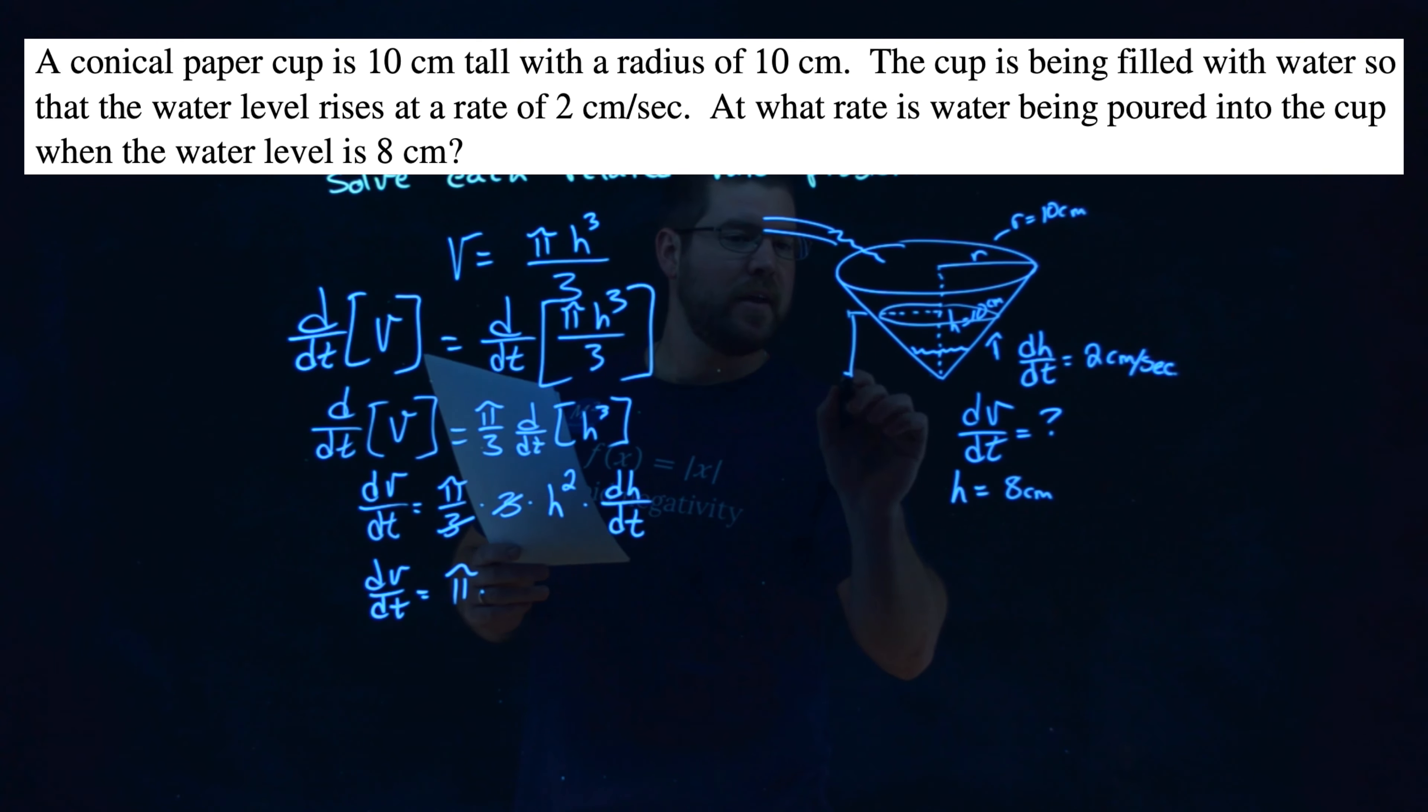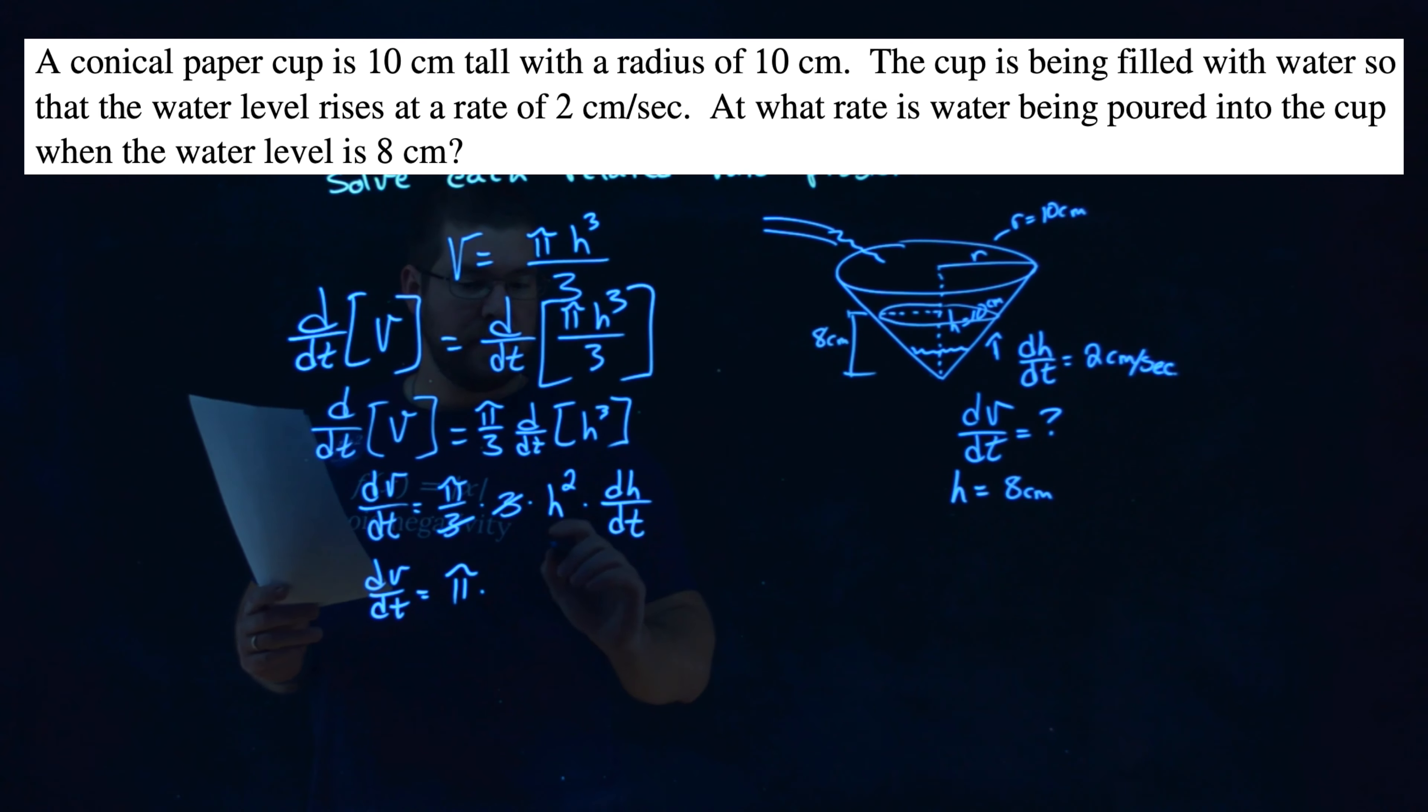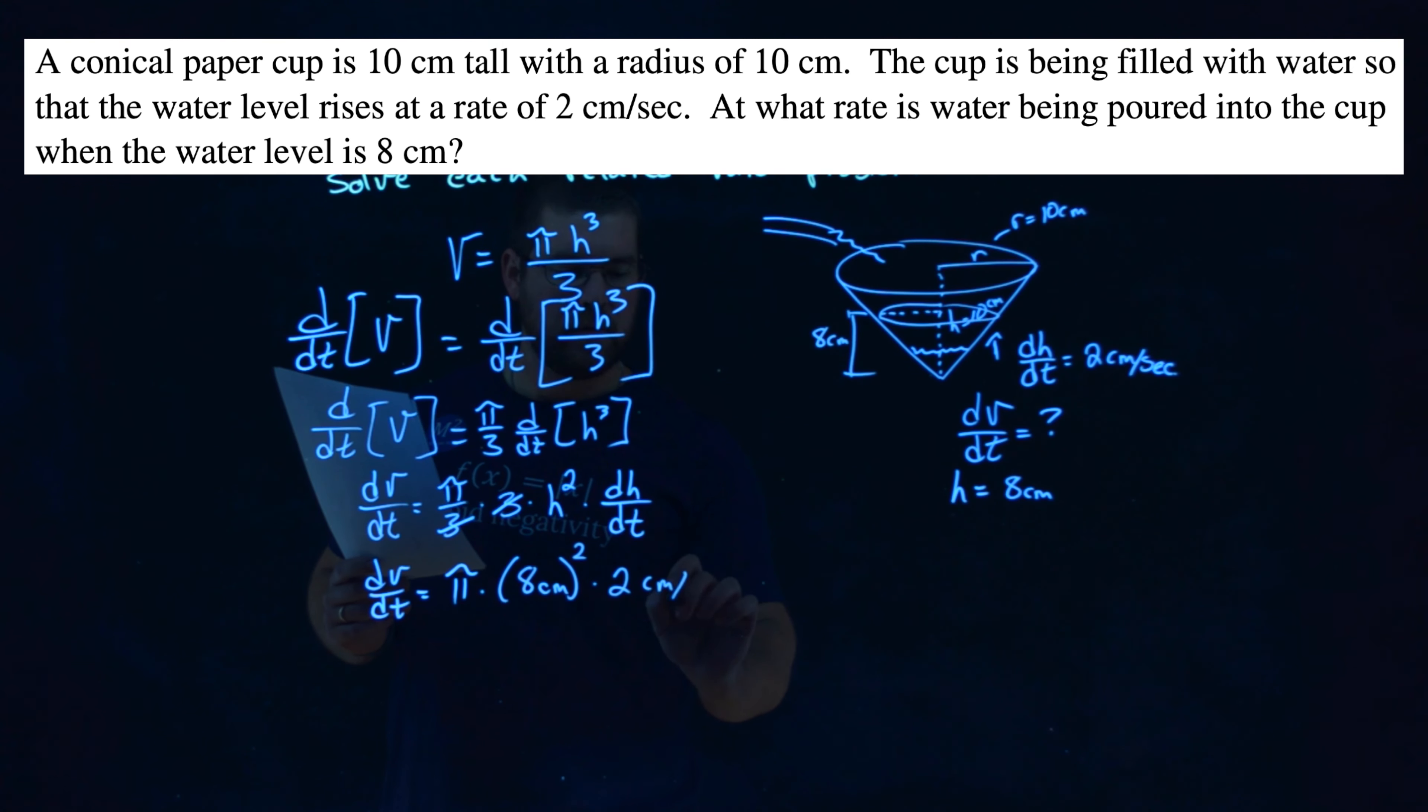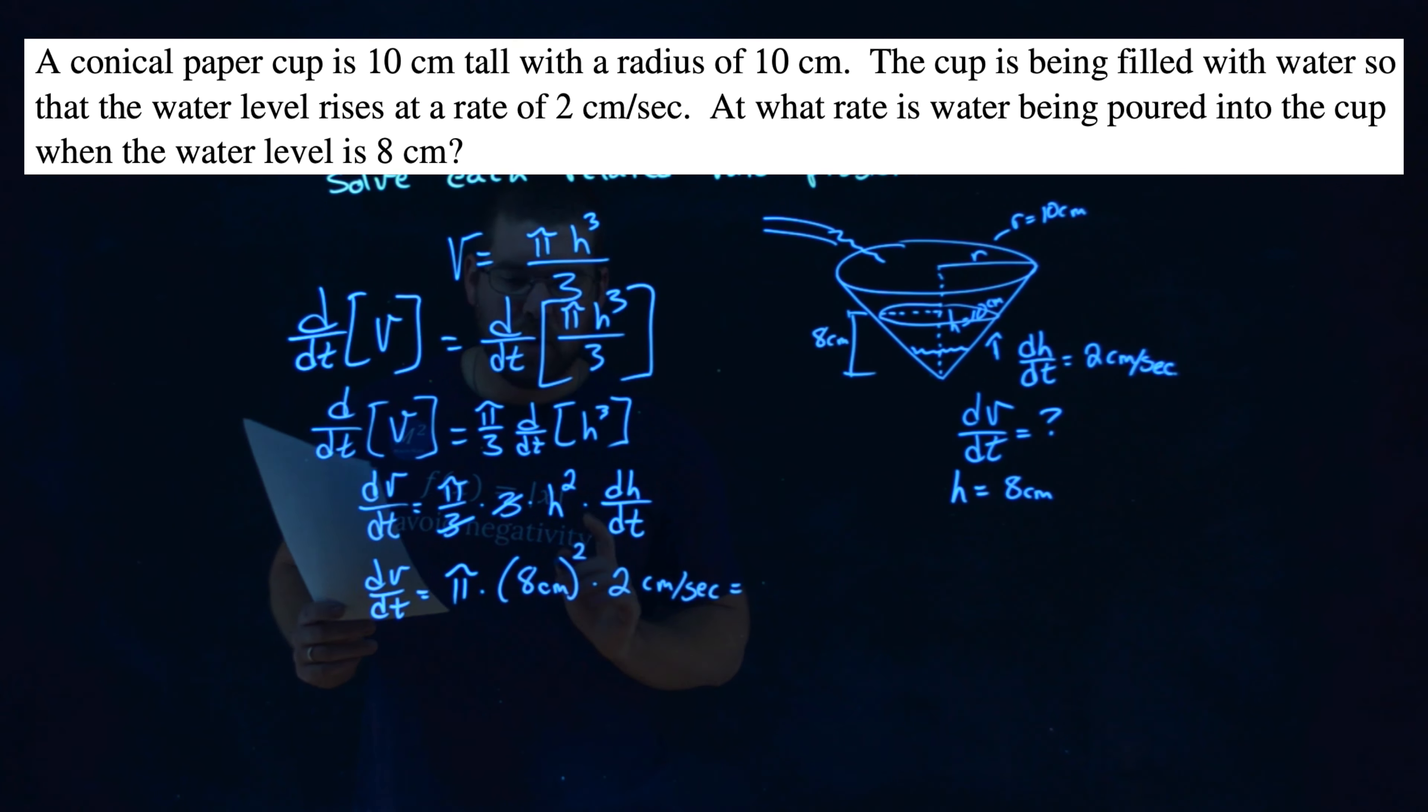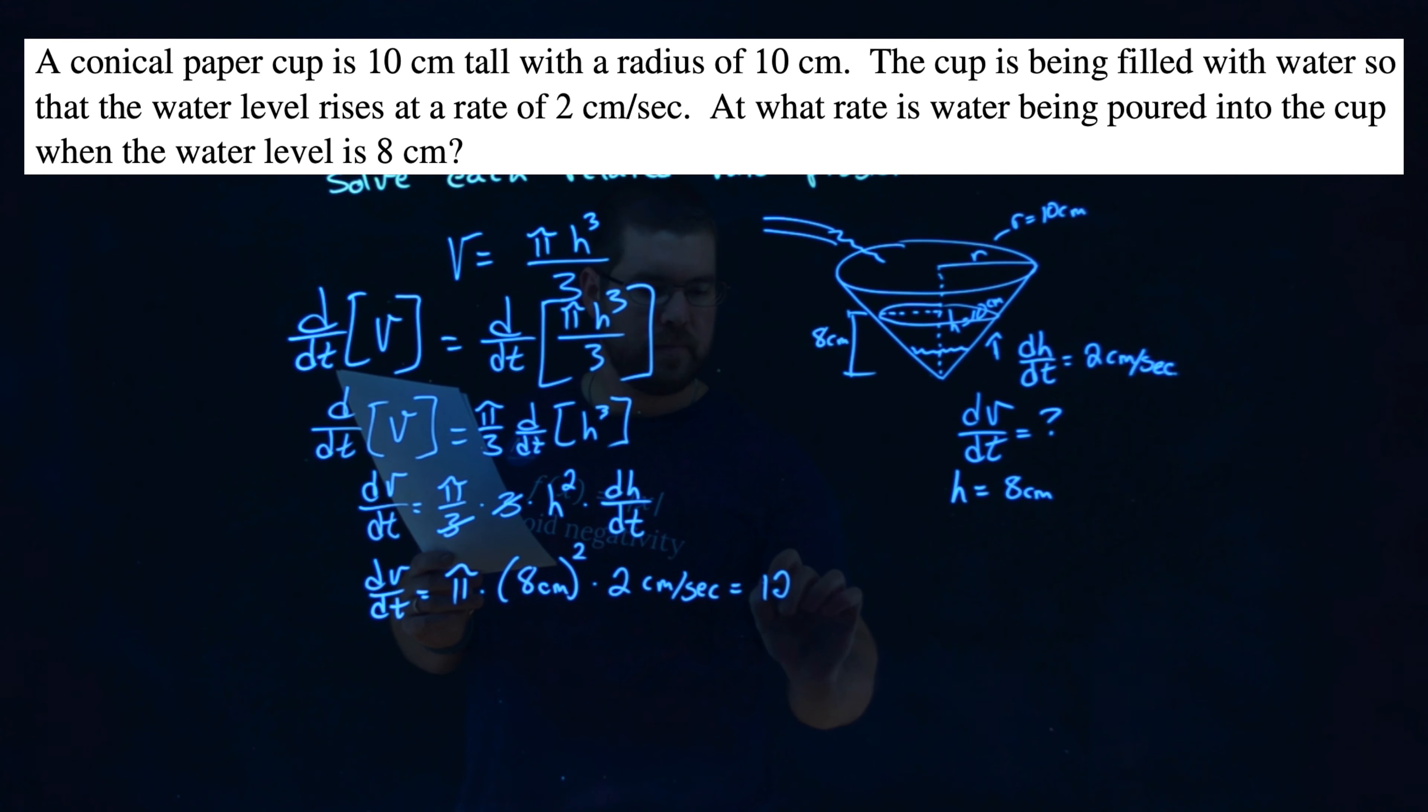And that height here is 8 centimeters. Now, so the 8 centimeters. So we have 8 centimeters. We're squaring that. Times our rate of the height changing is 2 centimeters per second. So what does that come out to be? Well, we multiply this all out. 8 squared times 2 is 128. We still have the pi.